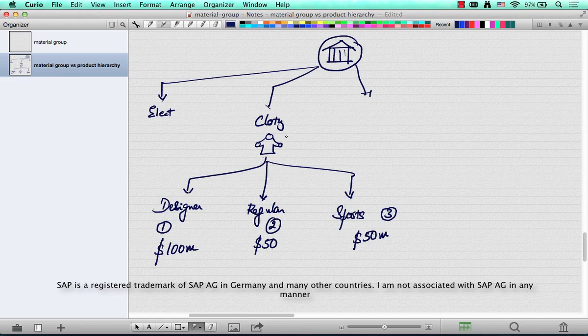And what's the total revenue in clothing? 100 plus 50 plus 50, that's 200 million.